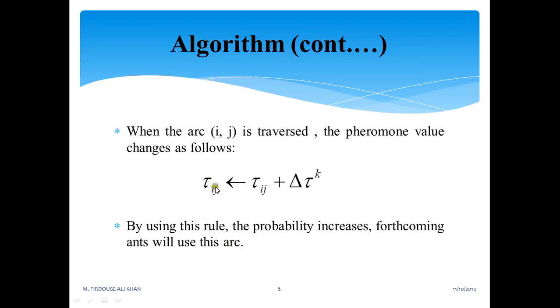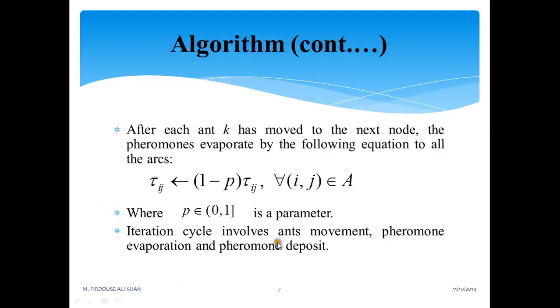When the arc (i,j) is traversed, the pheromone values change as follows. This is how the change in pheromone value can be seen by using this rule. The probability increases for forthcoming ants to use this arc if pheromone is found with increasing probability. After each ant k has moved to the next node, the probability of the path being followed increases.